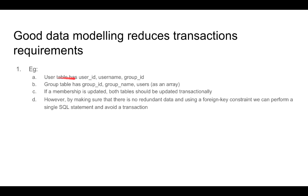In this situation, if a membership is updated — say the group of a particular user is changed — not only do we have to update the user table and change the group ID, but we also have to go to the group table and update the users array. We have to do both of these operations transactionally. If one operation goes through and the other does not, we have an inconsistent state and we won't know whether the group table has the true data or the user table has the true data.